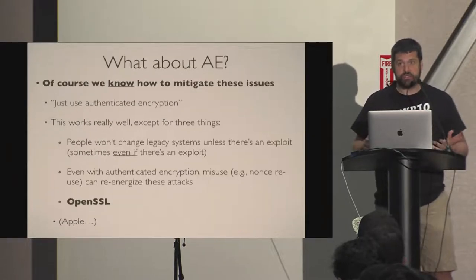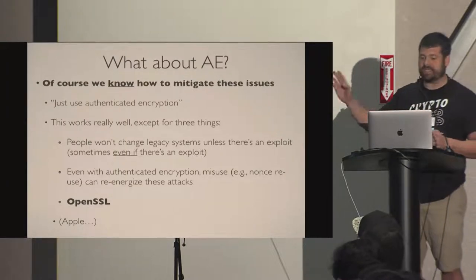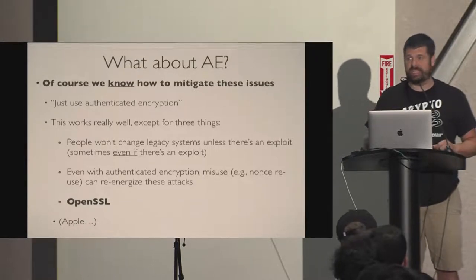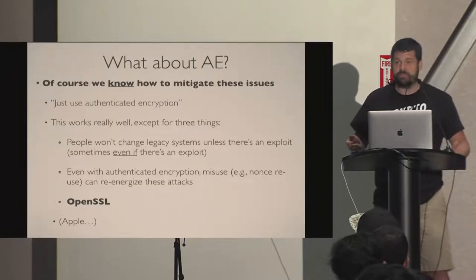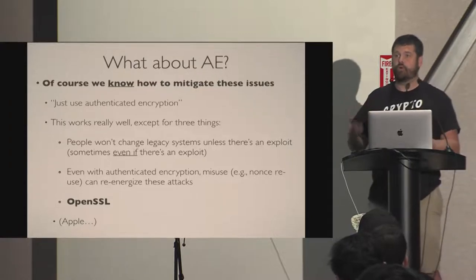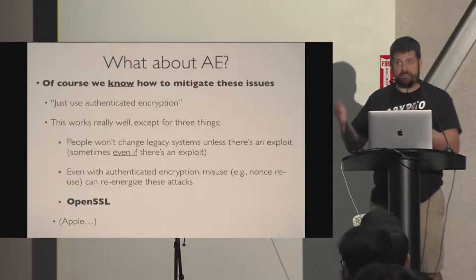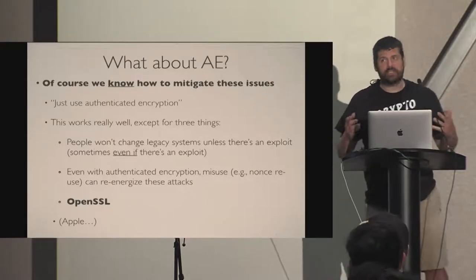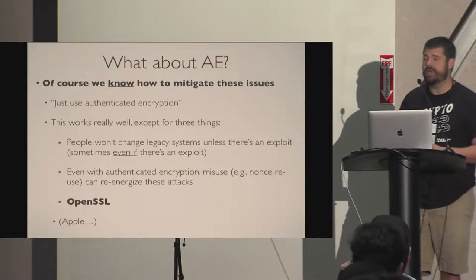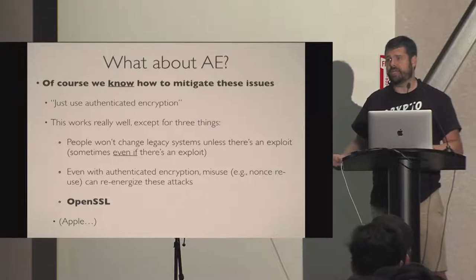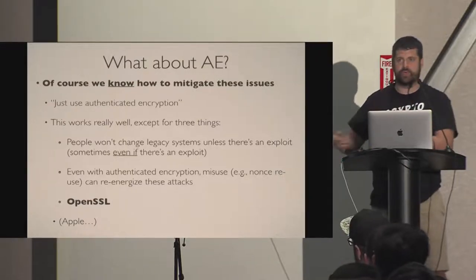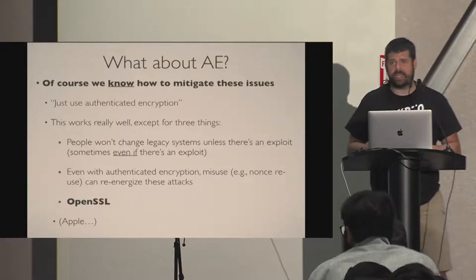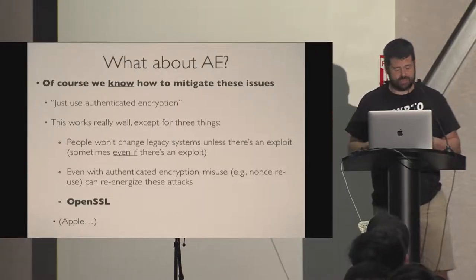The answer to this problem is you should be authenticating your encryption — that's the obvious solution. We tell people to do this, but they don't always listen. The fact that we're still seeing vulnerabilities in TLS in 2019 tells us we haven't solved this problem. People don't like to change legacy systems unless they see proof of exploitability. Even in well-trodden areas like simple padding oracle attacks on TLS, we see problems. And even if you use authenticated encryption, someone goes with AES-GCM and reuses a nonce — suddenly a new malleability issue pops up. And then there's OpenSSL.